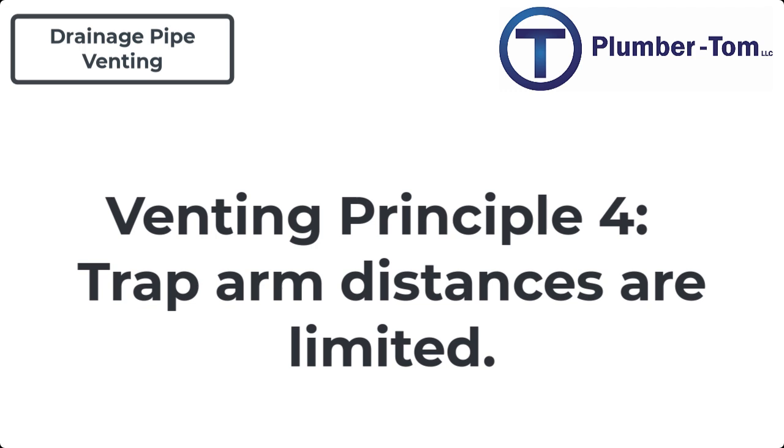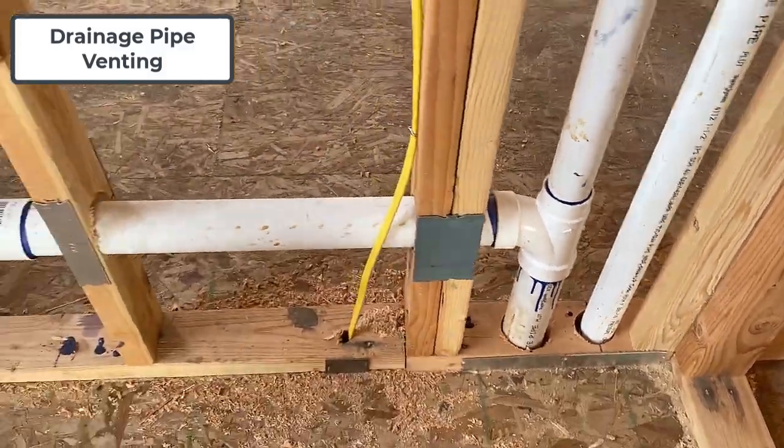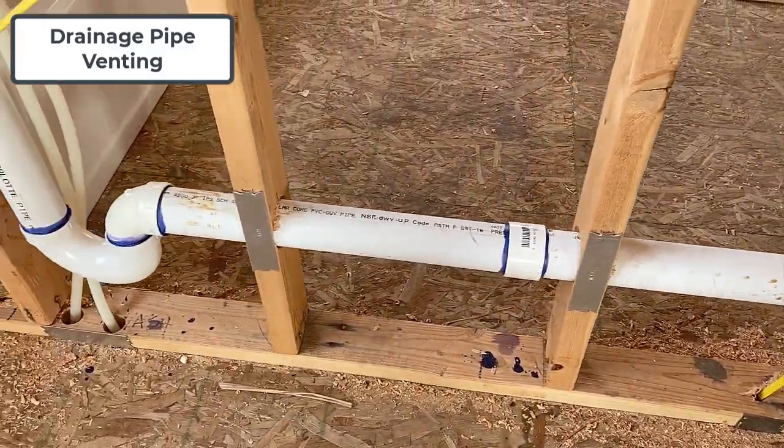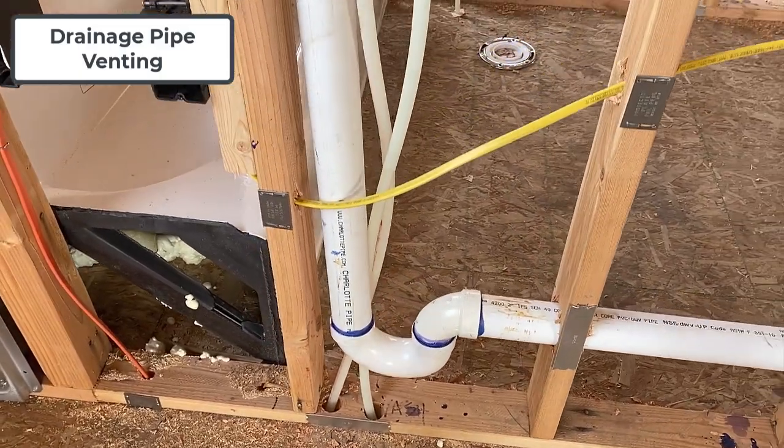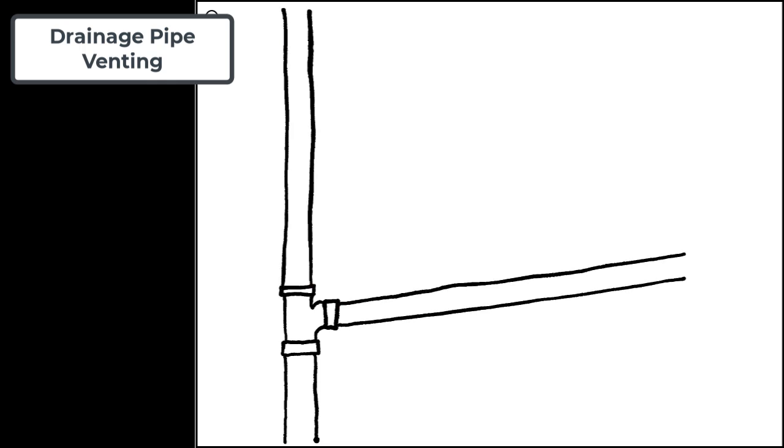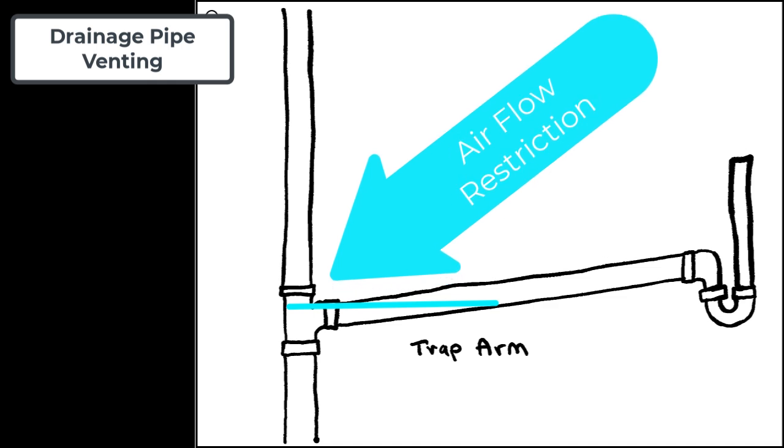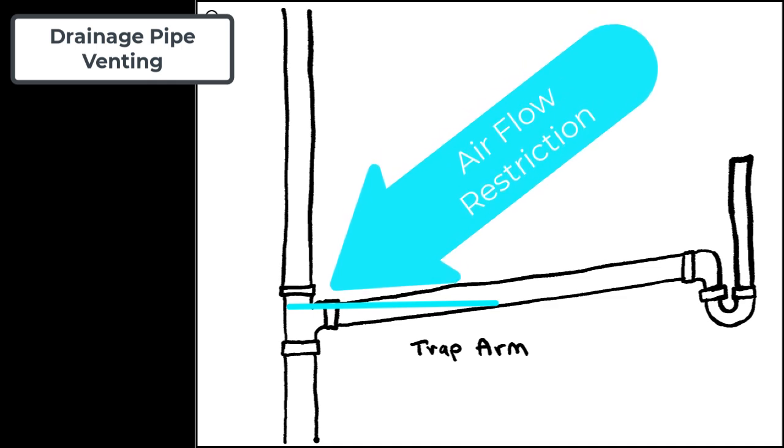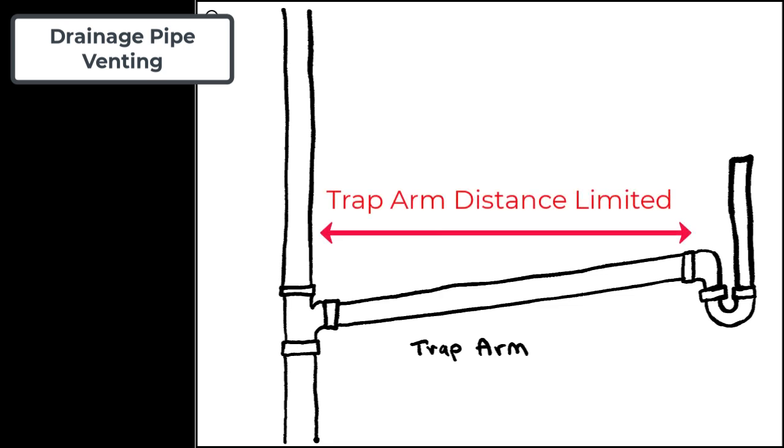Fundamental principle number four: trap arm distances are limited. A trap arm is a horizontal branch coming off of a vertical stack or a horizontal branch which extends to the location of the fixture. Obviously drains have slope in order for waste to flow downstream. If the trap arm extends too far, it will slope up above the connection point of the vent. This will limit the airflow and the drain will not function properly.